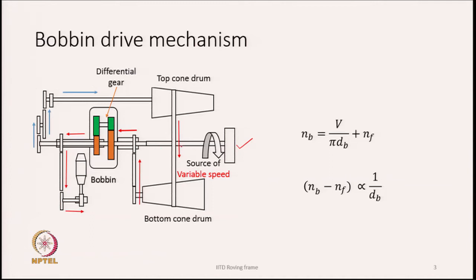From the main shaft, tracing the motion transmission: the orange and blue arrows show how the motion is transmitted. At the other end of the main shaft there is a gear, and from this gear the motion goes to the cone drum. We have a top cone drum and a bottom cone drum, and these two cone drums are connected by a belt.